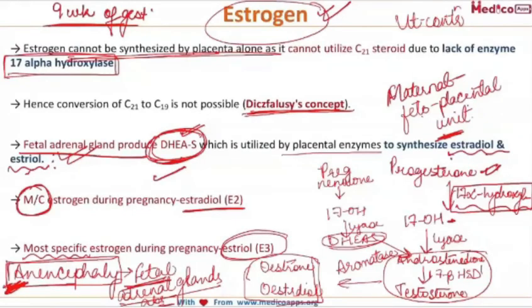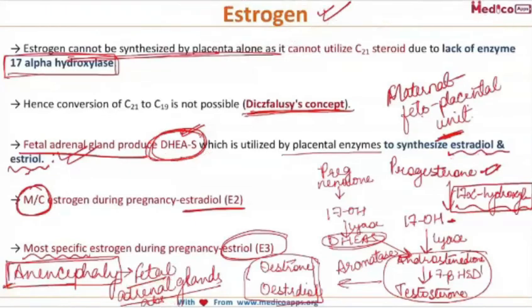It is estrogen which is required for uterine contractions at term. In cases of anencephaly, since there is fetal adrenal gland hypoplasia or their absence, DHEAS will not be produced, and in turn estradiol and estriol are not produced. Thus the initiation of uterine contractions at term will not occur, leading to post-dated pregnancy. Additionally, oxytocin must act on an estrogen-primed uterus, so in anencephaly, the uterus is also refractory to oxytocin — giving oxytocin usually gets no response.